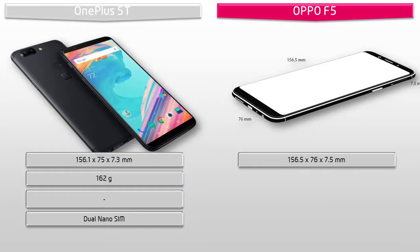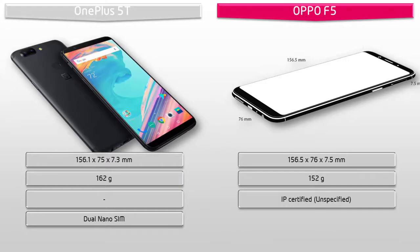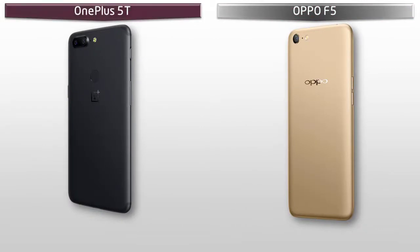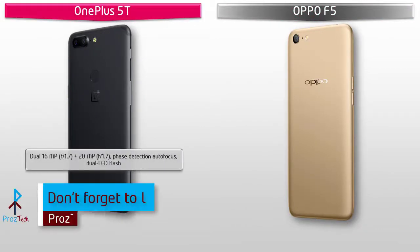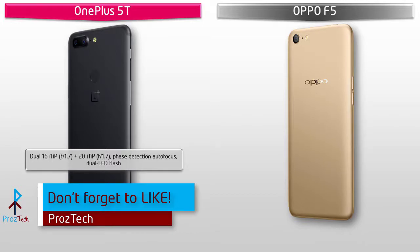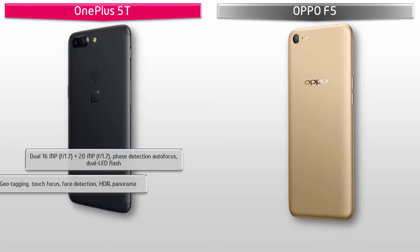The Oppo F5 is 156.5 by 76 by 7.5 mm in thickness and weighs 152 grams, with dual nano-SIM support. About the camera, the OnePlus 5T comes with a 16 MP plus 20 MP Sony primary camera with f/1.7 aperture, autofocus, dual LED flash, 1.6x optical zoom, geotagging, touch focus, phase detection, panorama, and HDR.